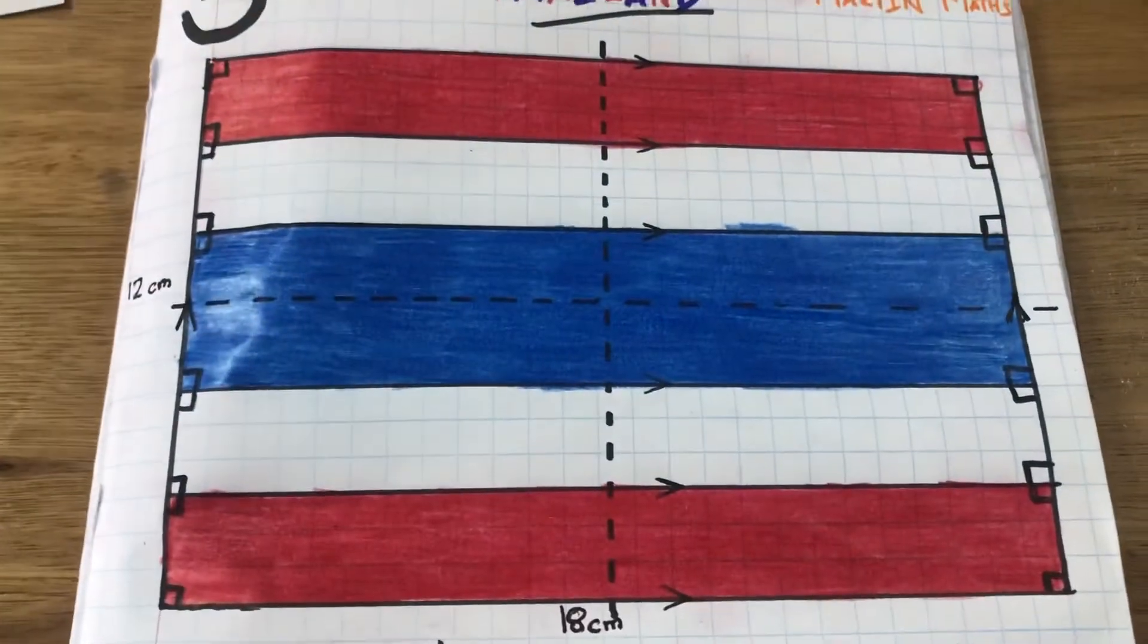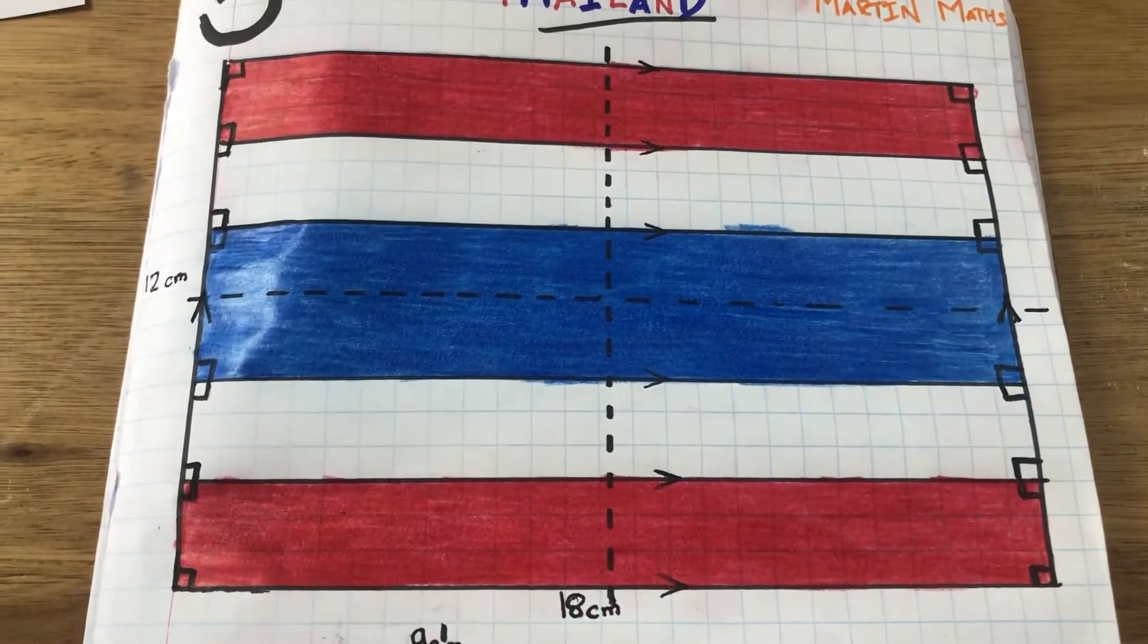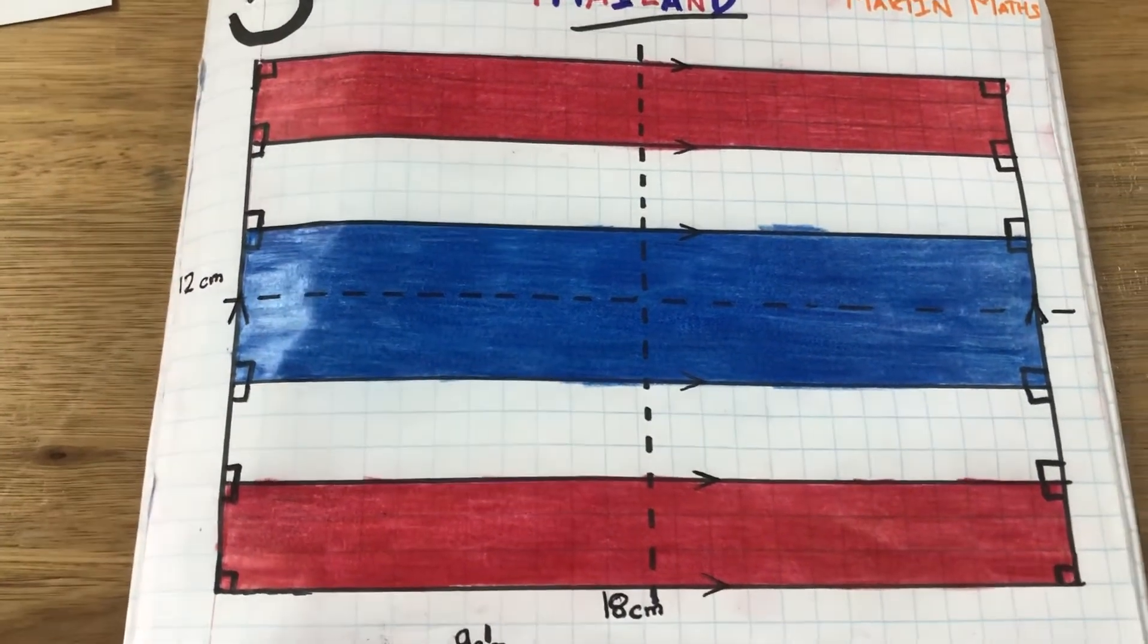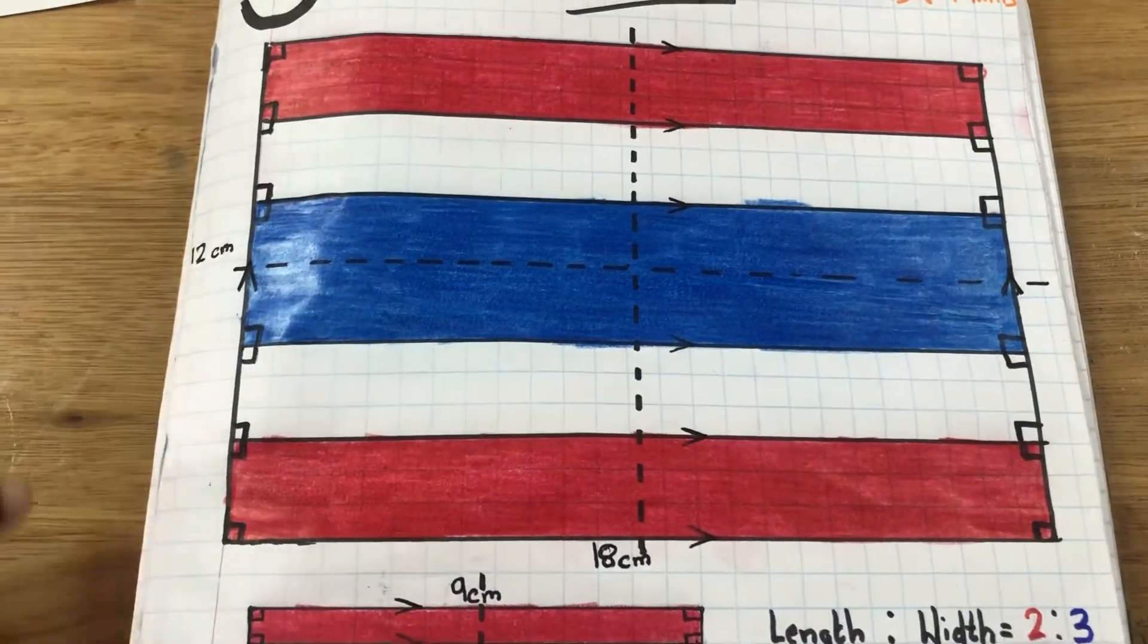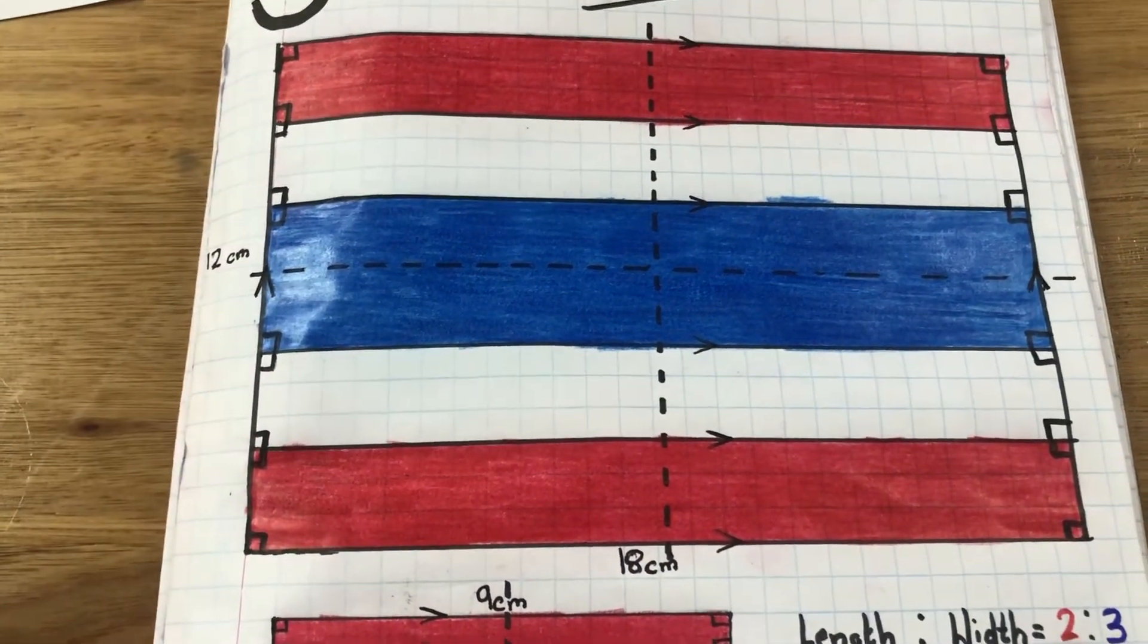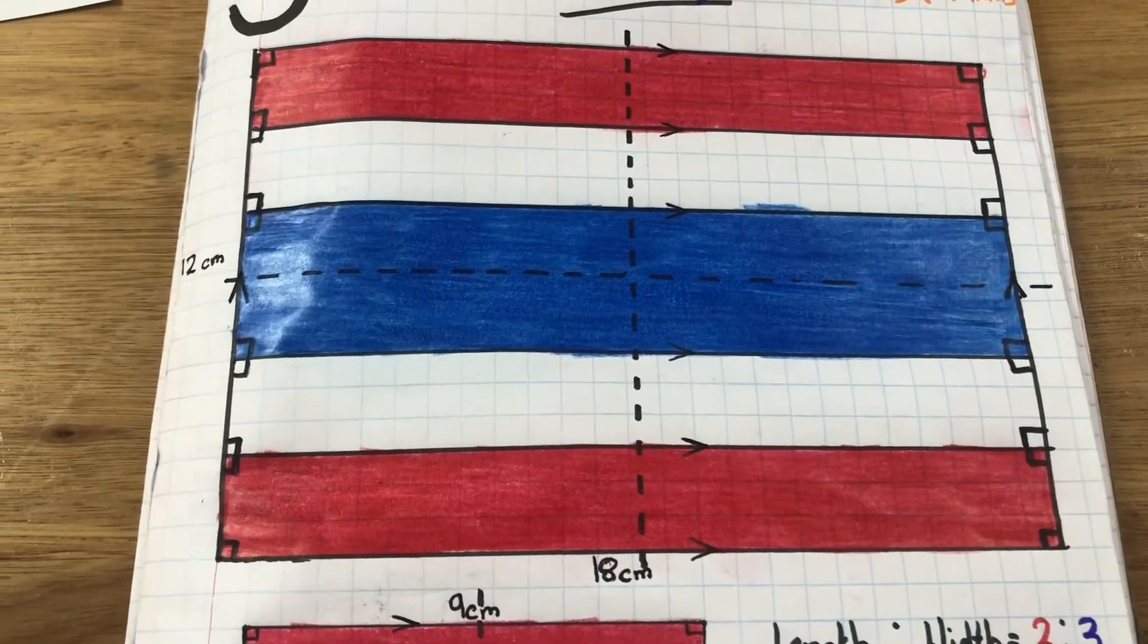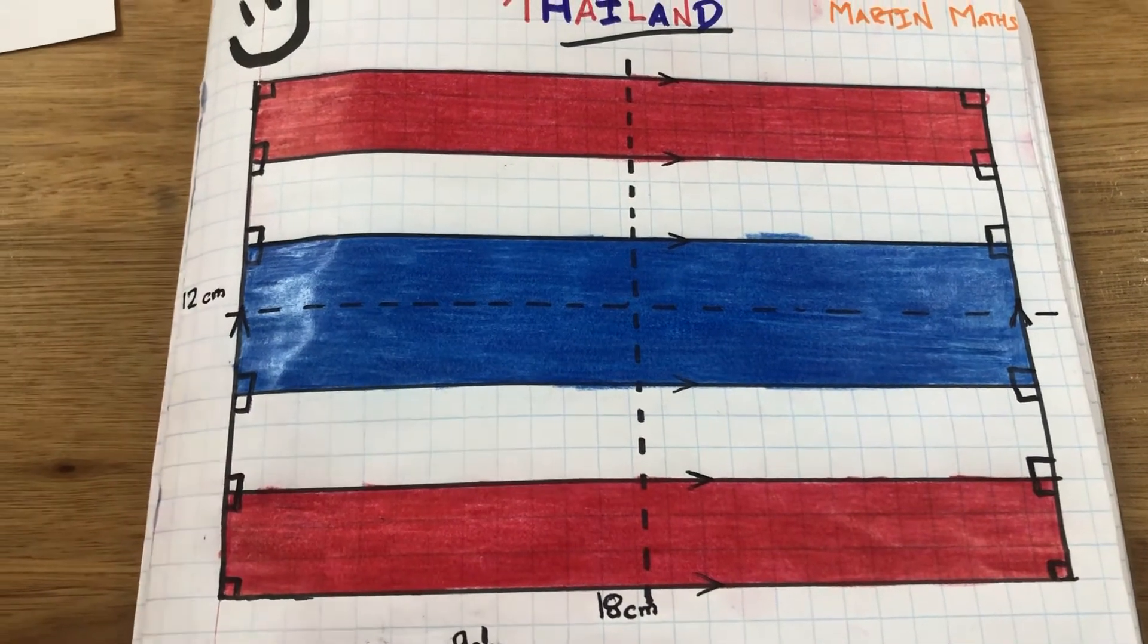What have we got next? So this is the Thailand flag. So I'm going to be talking about perimeter. The height is 12 centimeters and the width is 18 centimeters. We can add 12 plus 12 or we can multiply it by 2. So 12 times 2 is 24. And 18 times 2 is 36. So 36 plus 12, I mean 12 times 2 is 24.